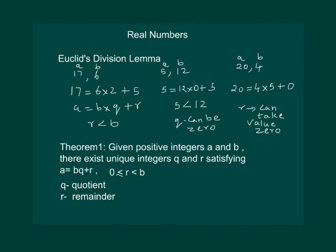Quickly let us see the long division method for this pair. Here, if we divide 17 by 6, we get remainder as 5, quotient as 2. So we can write 6 into 2 plus 5 equal to 17.